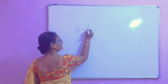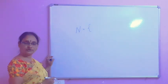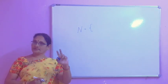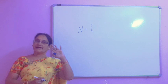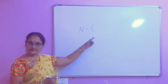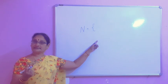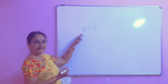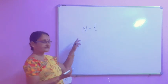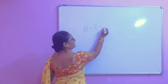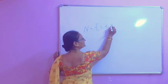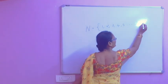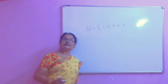N is equal to, in flower bracket — you know that there are four kinds of brackets: bar bracket, common bracket, flower bracket and square bracket. Whenever we say things in set form, we have to use the flower bracket. N is the set of natural numbers, denoted by N, and it is 1, 2, 3, 4, 5 and so on up to 9, which are called as natural numbers.